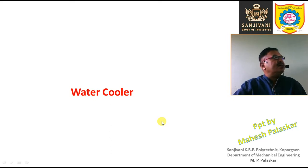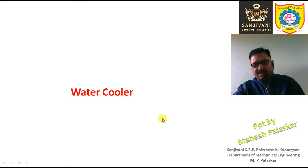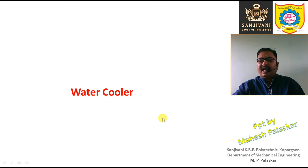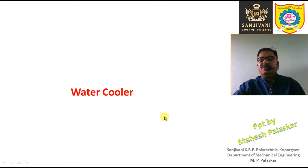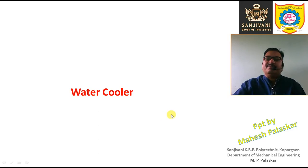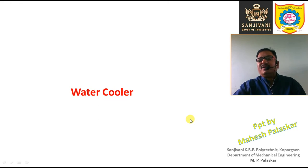Right now let us study the water cooler. The water cooler is used to cool drinking water. In summer season, naturally available water is slightly warm and it will not quench the thirst properly. So if we cool the water to a chilled condition, the temperature may be something between eight degrees centigrade to sixteen degrees centigrade.